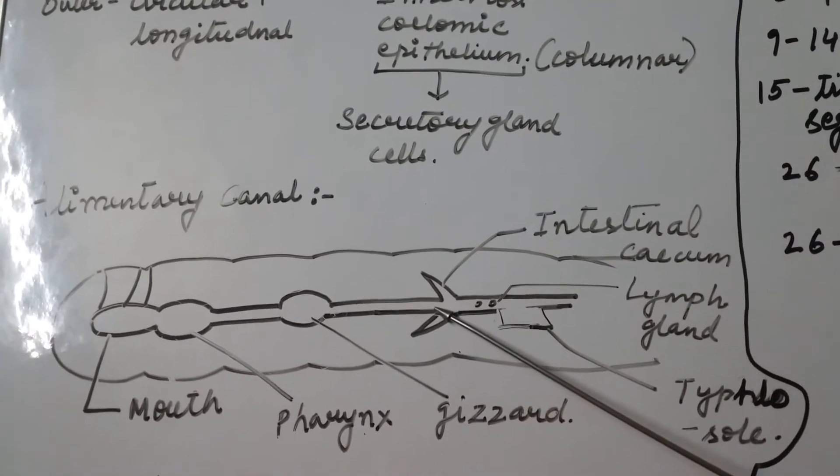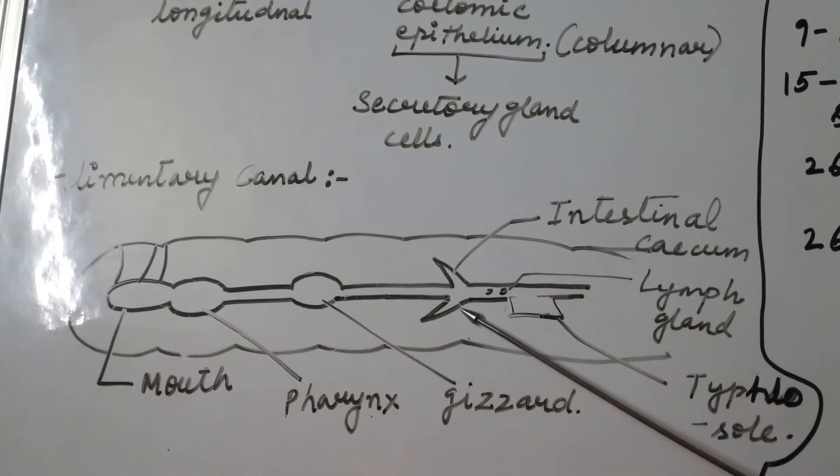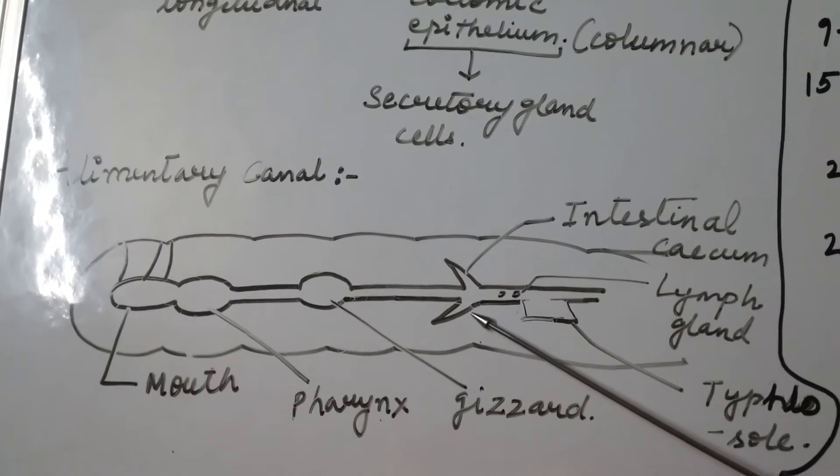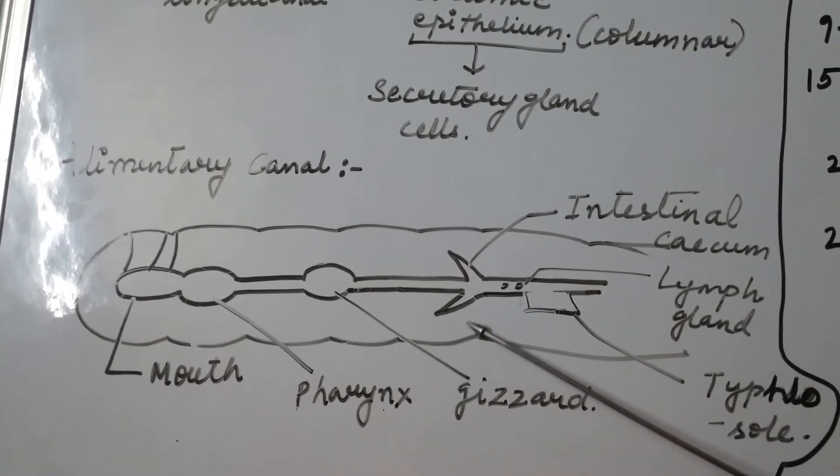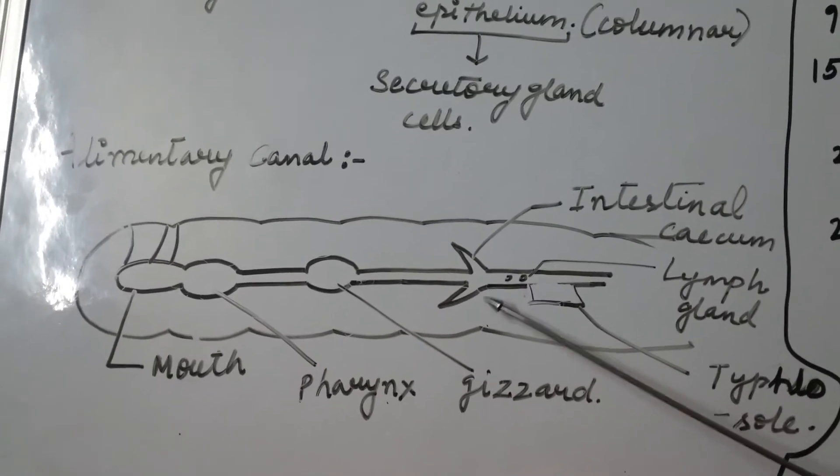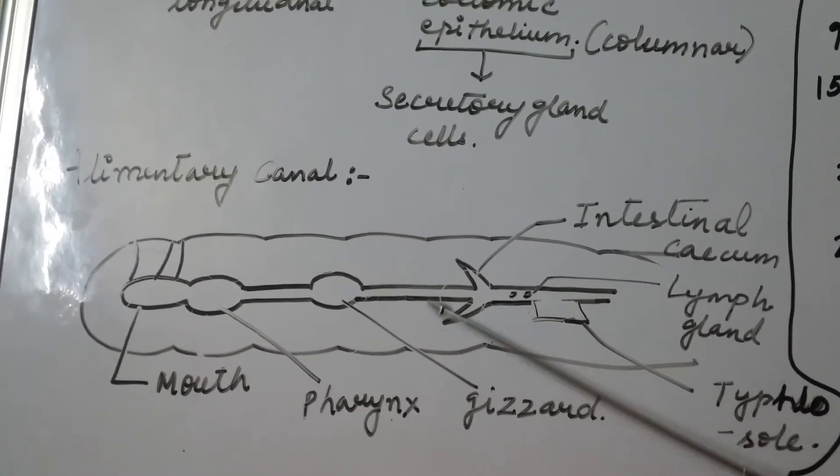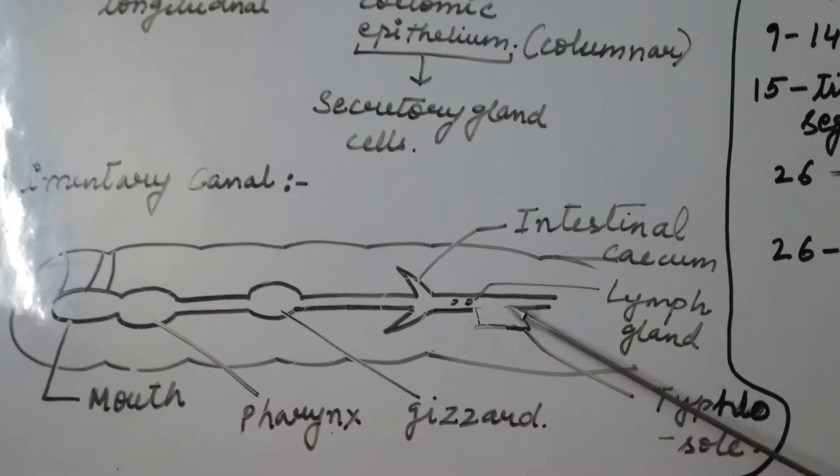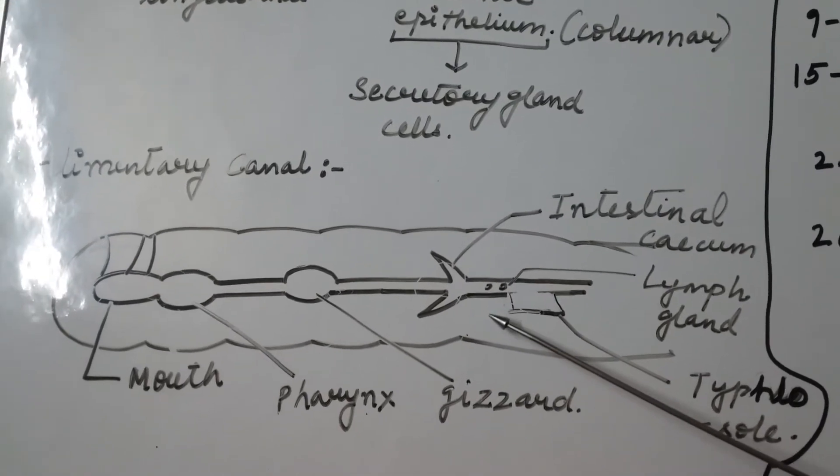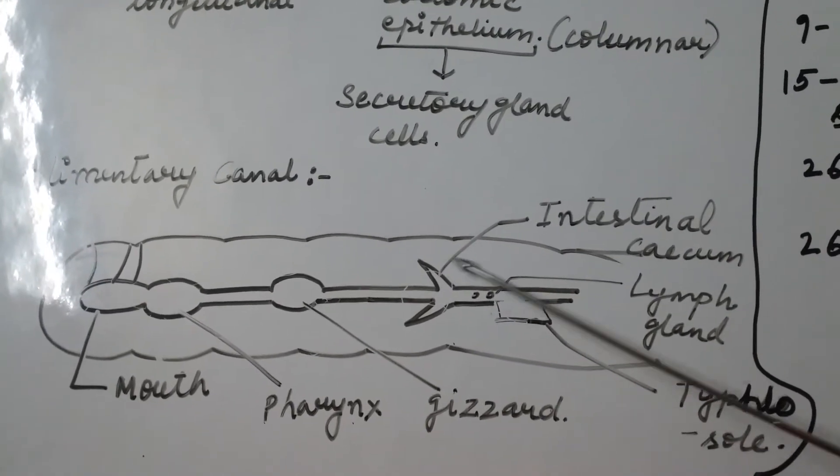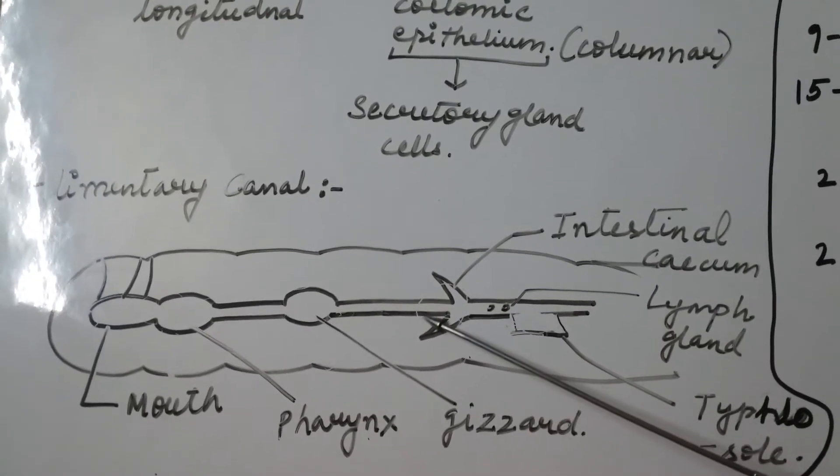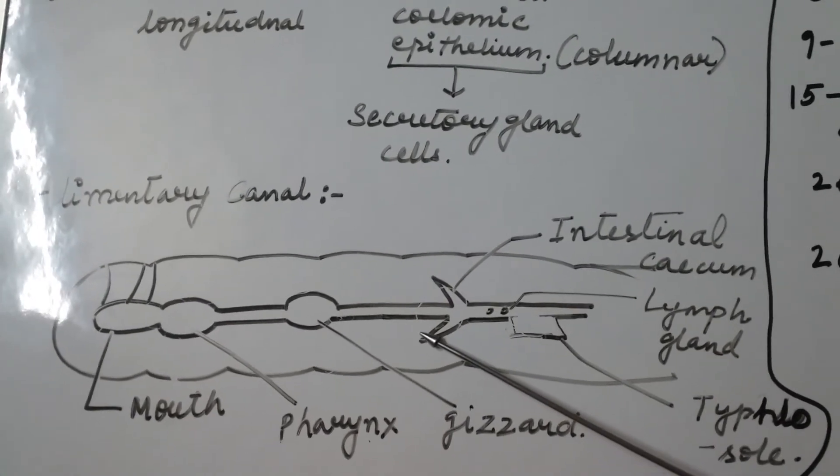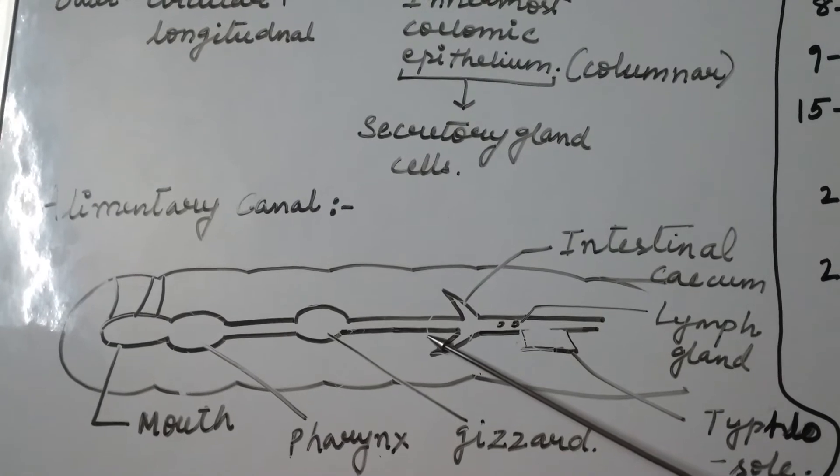With the continuation of gizzard, it then leads to stomach that extends from 9 to 14 segments. Food of the earthworm is leaves and organic matter mixed with soil. There are the presence of calciferous glands in the stomach that neutralizes the humic acid present in the humus of the soil, and then it is digested in this part of the body called the stomach.